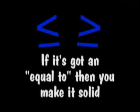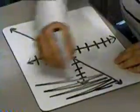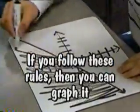If it's got an equal to, then you make it solid. If there's no equal to, then you make it dotted. If you follow these rules, then you can graph it.